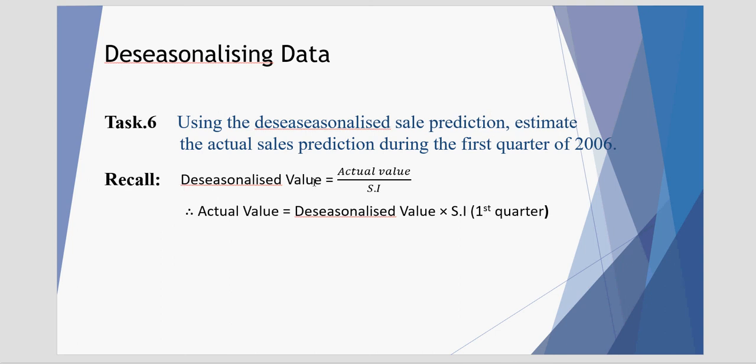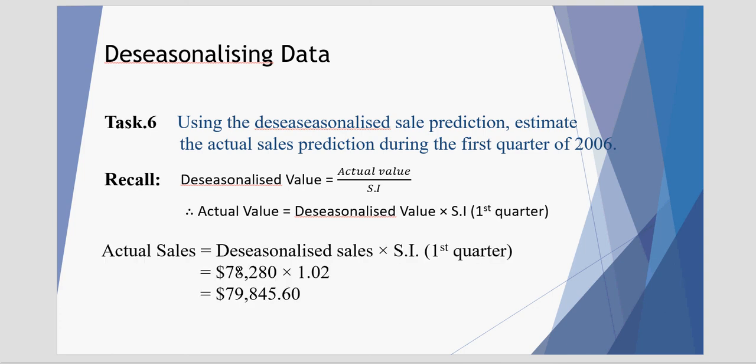When we found our deseasonalized value, we looked at the actual and we divided by the seasonal index. Now to go back to the actual, I must multiply the seasonal index across to the deseasonalized value. We put in a deseasonalized value of 78.28 thousand or 78,280, and we multiply that by the seasonal index of the first quarter. Because this is looking at the first quarter of 2006. The first quarter's seasonal index was 1.02. Multiplying that together, that predicts the actual sales during the first quarter of 2006 to be $79,845.60.